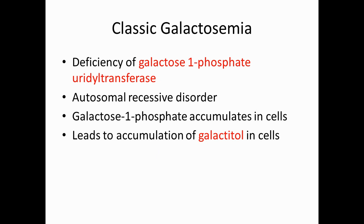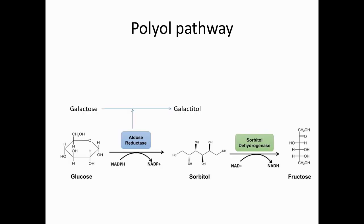The first galactose-related disease is classic galactosemia, which involves a deficiency of galactose-1-phosphate uridylyltransferase (GALT). It is an autosomal recessive disorder in which galactose-1-phosphate accumulates in cells, leading to accumulation of galactitol. This occurs because aldose reductase, which converts glucose to sorbitol in the polyol pathway, also converts galactose into galactitol.